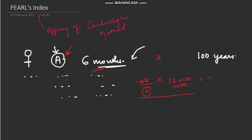So contraceptive A would fail Y times if it had been used consistently for a period of 100 years. Now let's go retrospective and try to analyze this again.